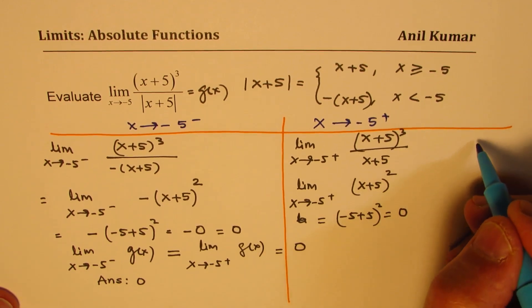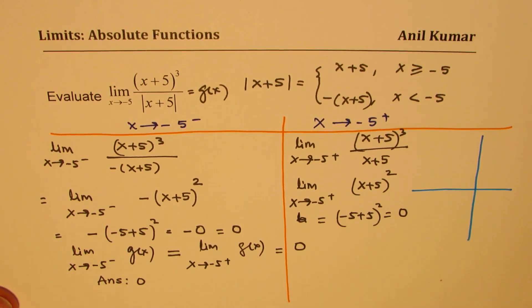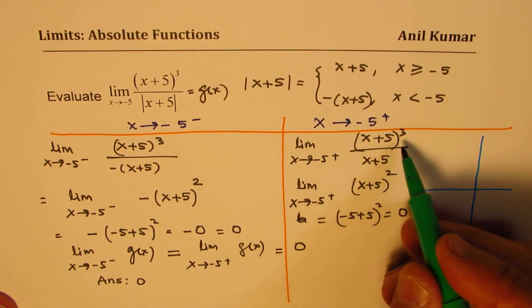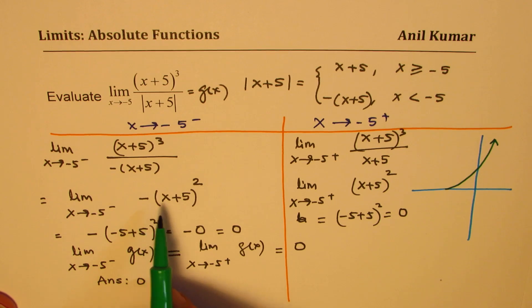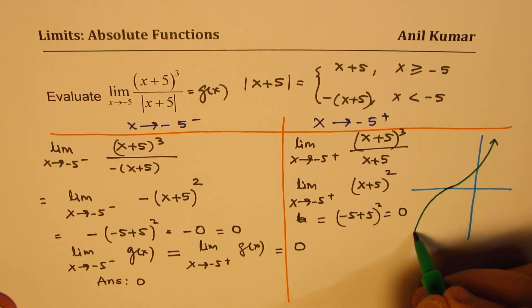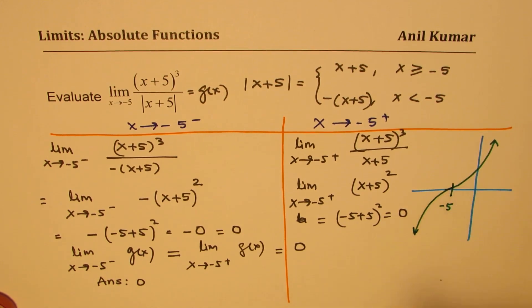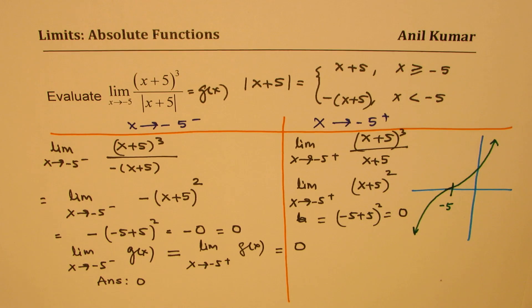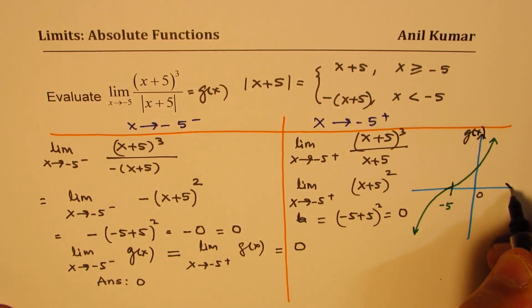If you sketch this graph, on the right side it is a parabola, and on the left side it is again a parabola but reflected. You can clearly see that at x equals minus 5 the limit is 0 — approaching from both directions you reach one fixed value, which is 0. The limit exists.